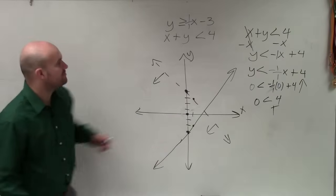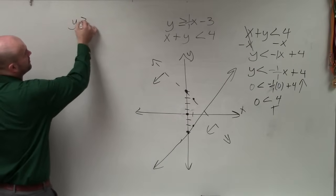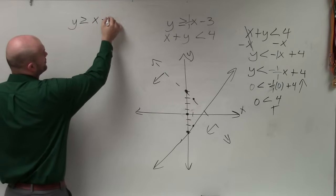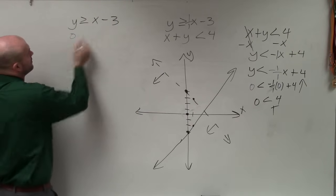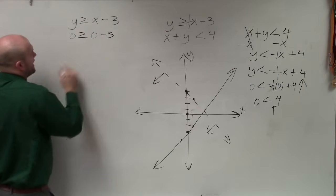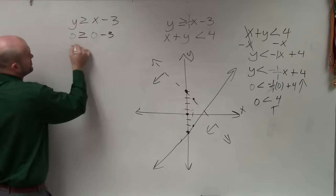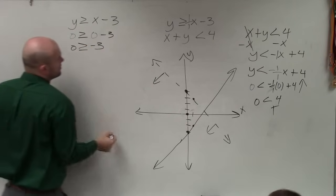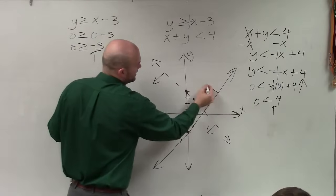And then I use a test point to determine if my test point is going to be true or false. So I have 0 is greater than or equal to 0 minus 3. And that is end up going to be true again. So since that is true, I shade above.